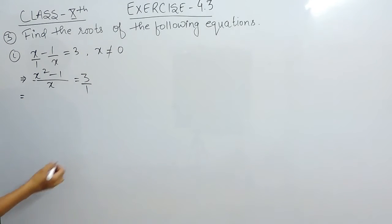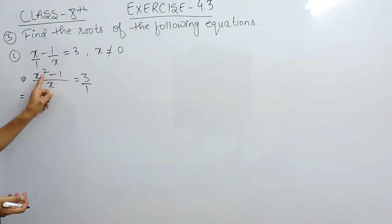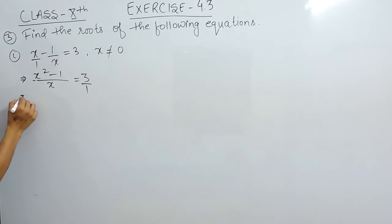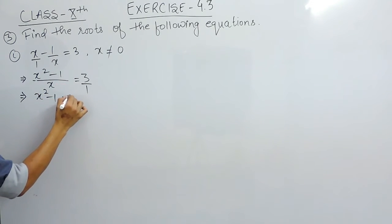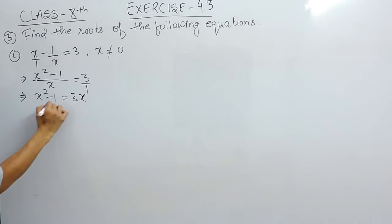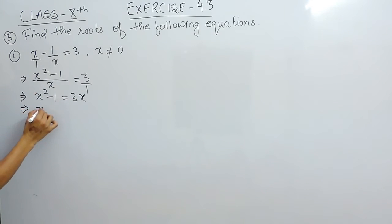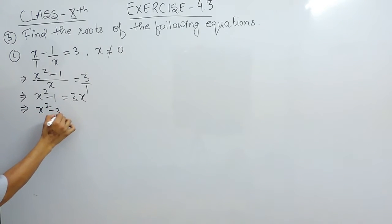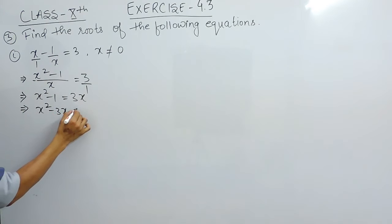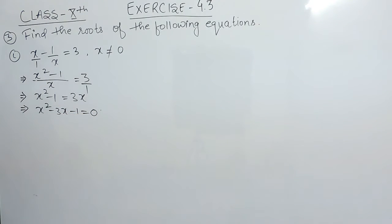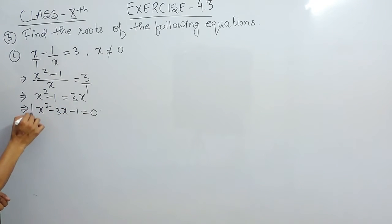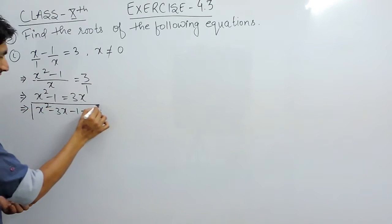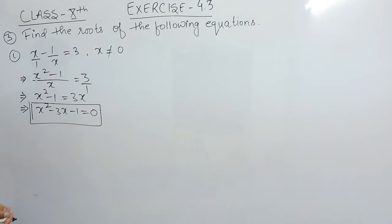Now we can cross-multiply. This multiplied by this remains as it is, and 3 multiplied by x is 3x. Shifting this to the left-hand side, the equation becomes x squared minus 3x minus 1 equals 0. This is our standard quadratic equation.